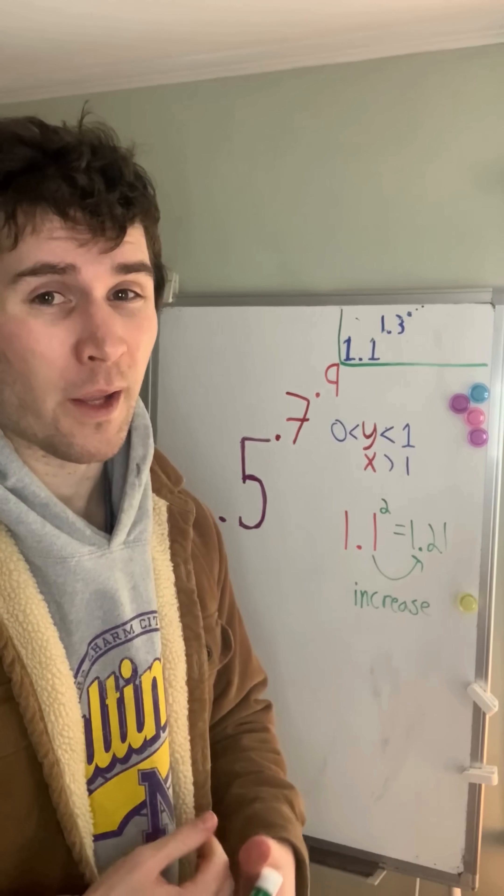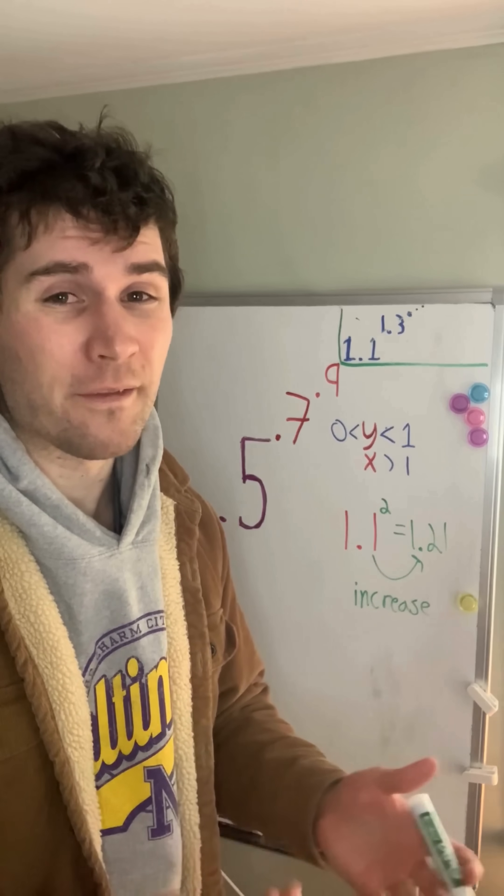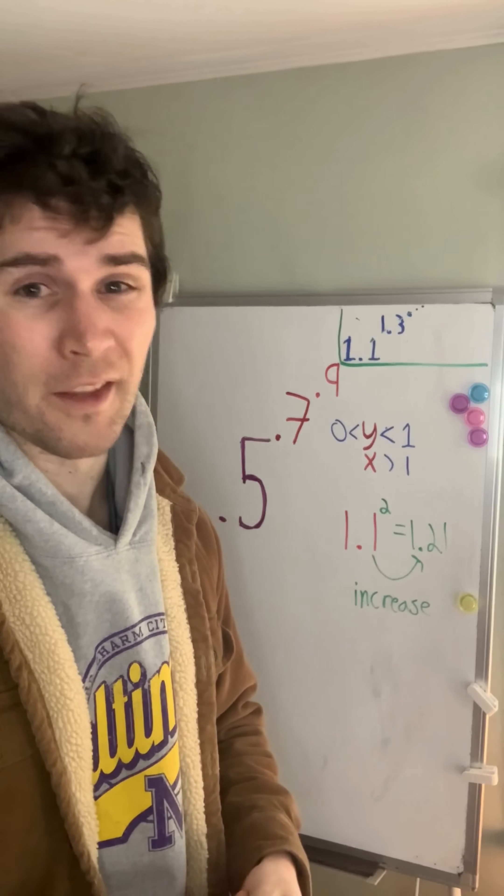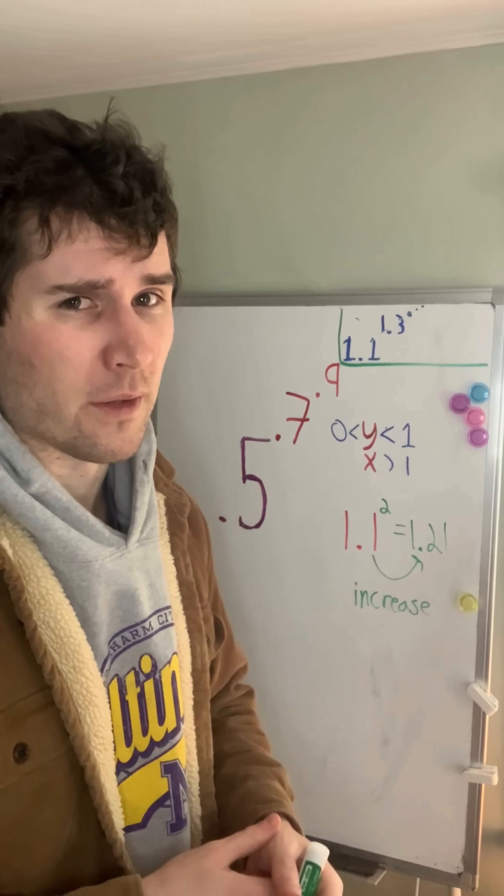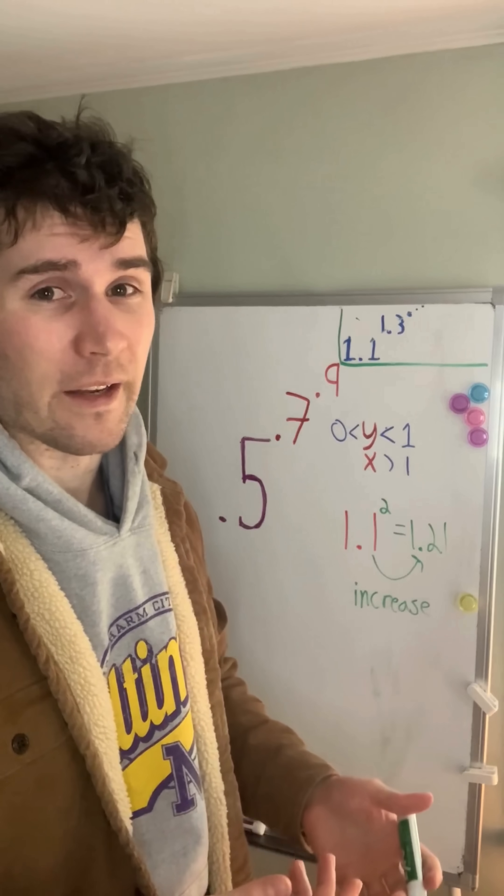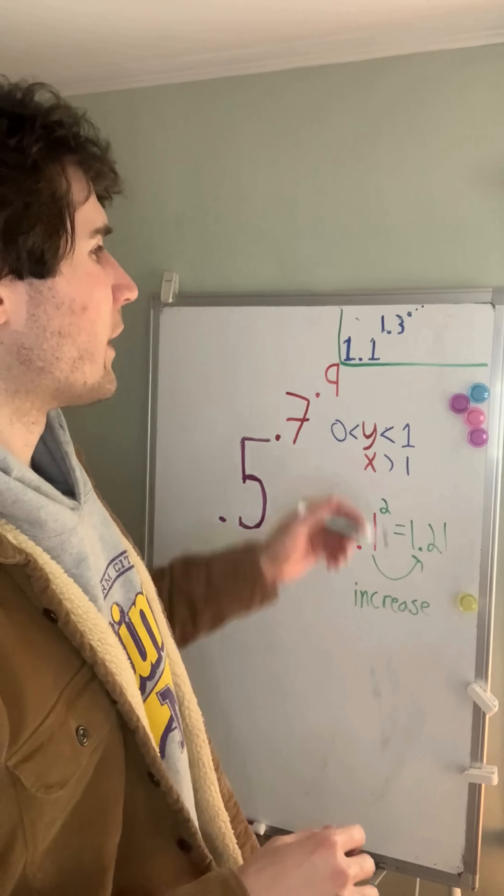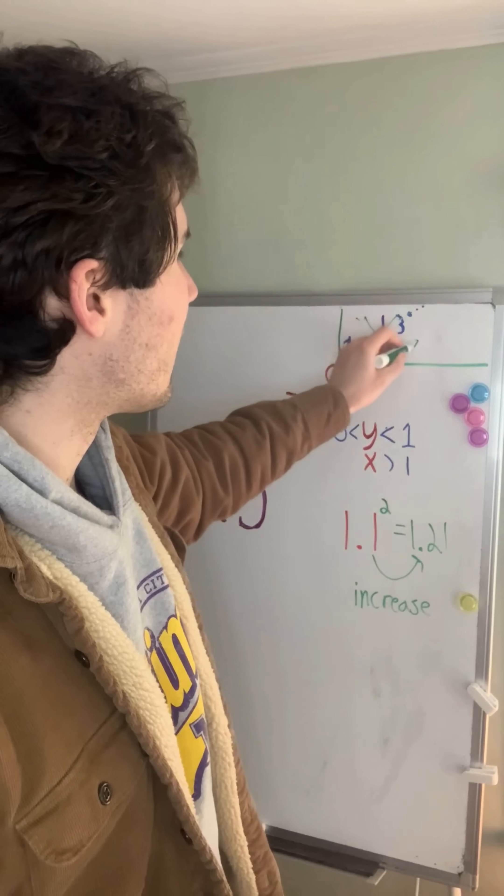So what's going to happen if we multiply 1.1 by itself an infinite number of times? I mean, all of these numbers are greater than 1, and they're all being raised in numbers that are greater than 1. So this number is going to head towards infinity. And 1.1 times itself an infinite number of times will also be infinity. So we'll write that in right here.